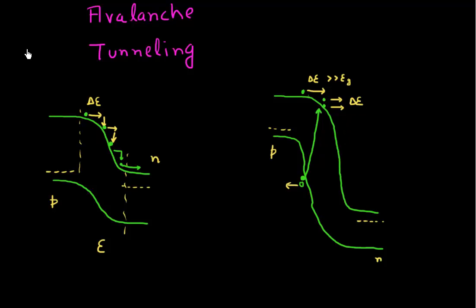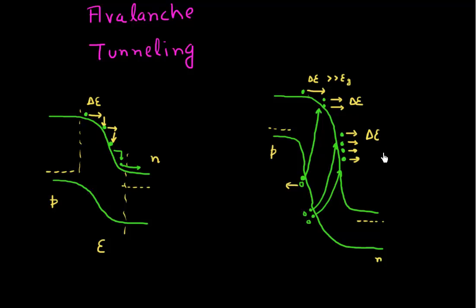Now both of them can excite two electrons from the valence band, generating two holes in the valence band, and now I have four electrons in my conduction band. All four of them will again move in this direction and gain a certain energy again. You can see that I'm moving towards this exponentially increasing concentration of electrons — where after four it becomes eight electrons, then eight becomes sixteen electrons, and so on. What you see is this exponential increase in the number of these electrons due to this ionization process, or what's called the impact ionization process.